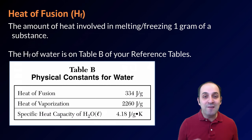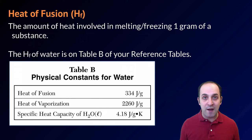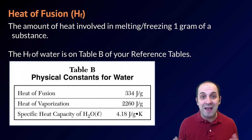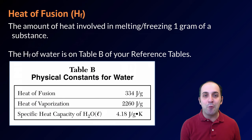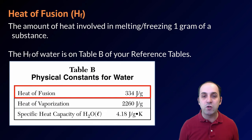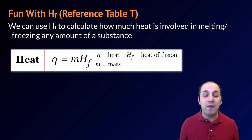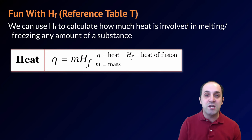Every substance has a characteristic amount of energy that you need to put into or take out of it in order to make it go through a particular phase change. These are expressed as some amount of energy in joules per gram. The first one is called heat of fusion, or HF. Fusion refers to melting, so the heat of fusion is the amount of energy necessary to melt or freeze one gram of a substance at its melting point. The heat of fusion for water is on reference table B: 334 joules per gram. The equation for this is Q = mHF, found on reference table T.